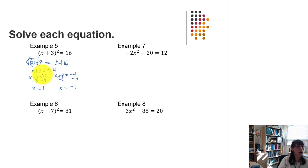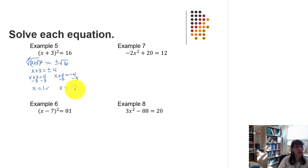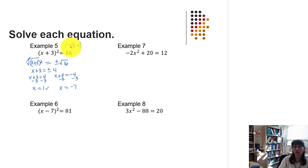Using positive 1: 1 plus 3 is 4, and 4 squared is 16, so positive 1 works. Using negative 7: negative 7 plus 3 is negative 4, and the quantity of negative 4 squared means negative 4 times negative 4, which does make 16. So both solutions work.